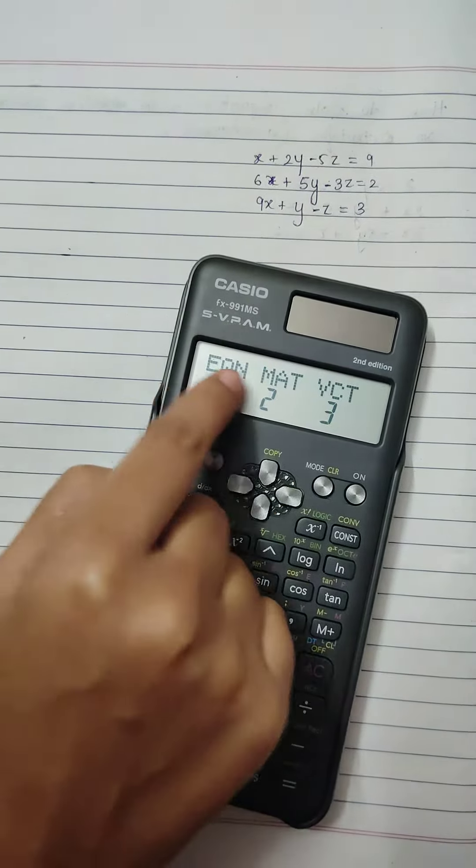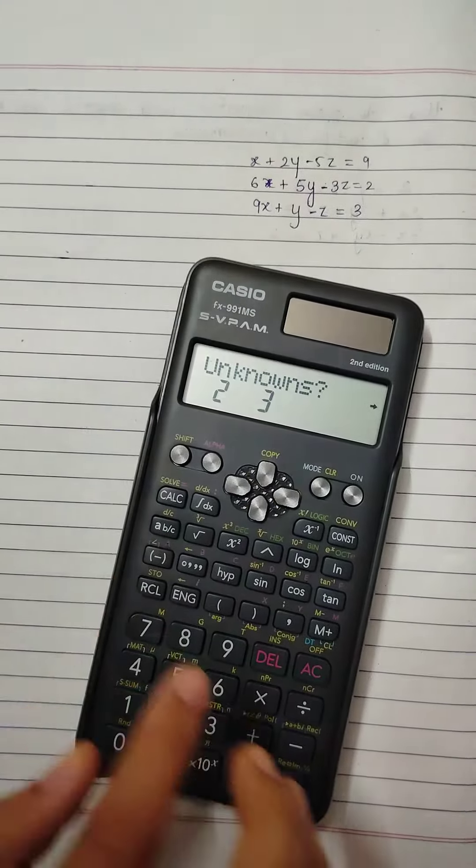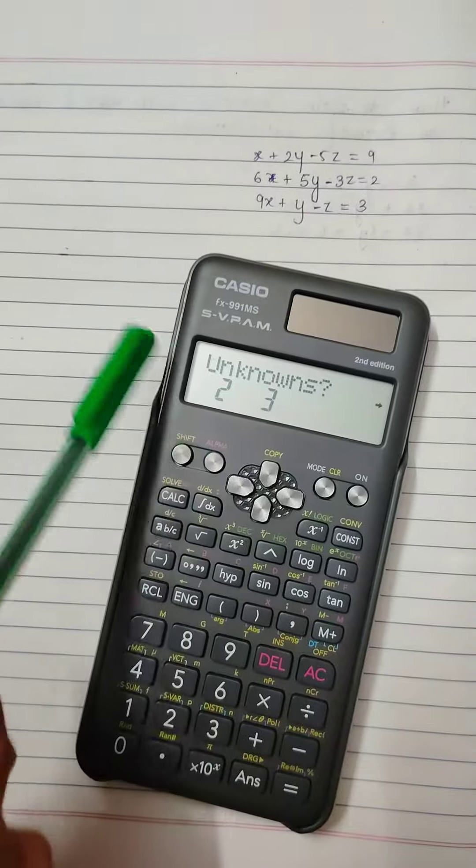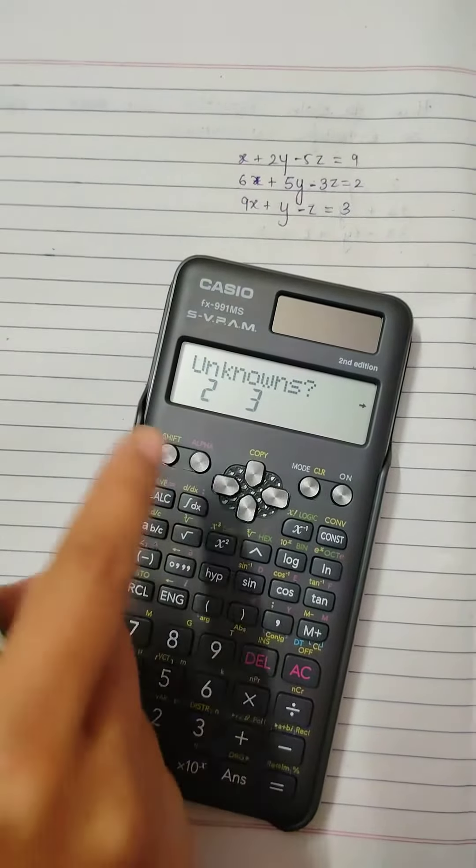So here we have equation. And here I took the unknowns as 3, so 3 variables. So I will change this to 3.